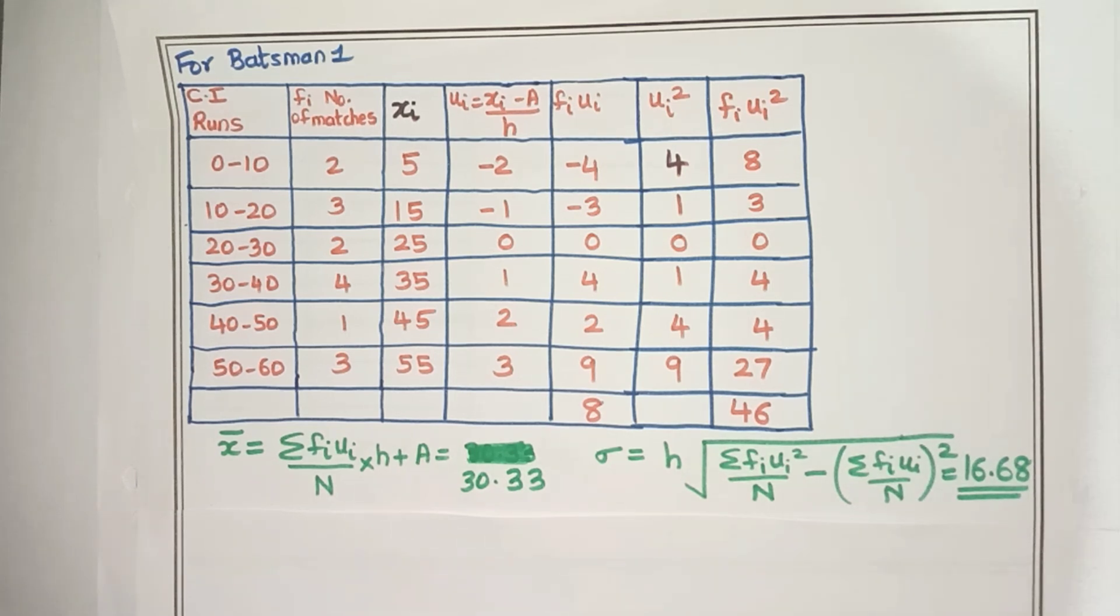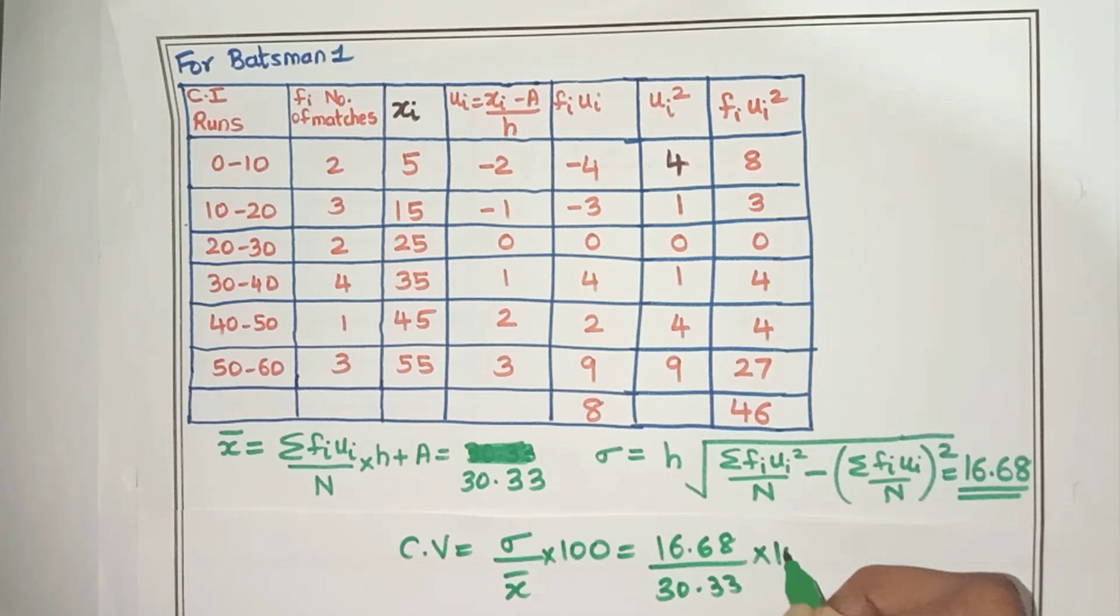Now let's find out the CV. CV, as I already told you, it is sigma divided by mean into 100, which is nothing but sigma is 16.68 divided by 30.33 into 100.